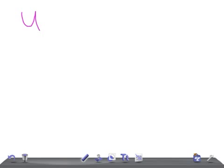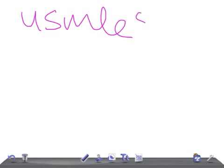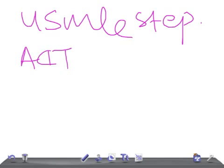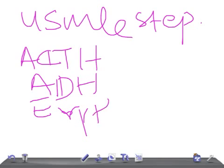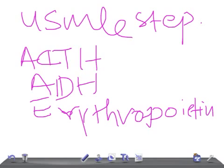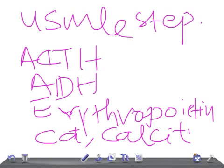So to summarize the key paraneoplastic markers important for USMLE Step 1 and Step 2 CK: ACTH, ADH, erythropoietin, antibodies against calcium channels, and calcitriol. These are very important for USMLE Step 1.